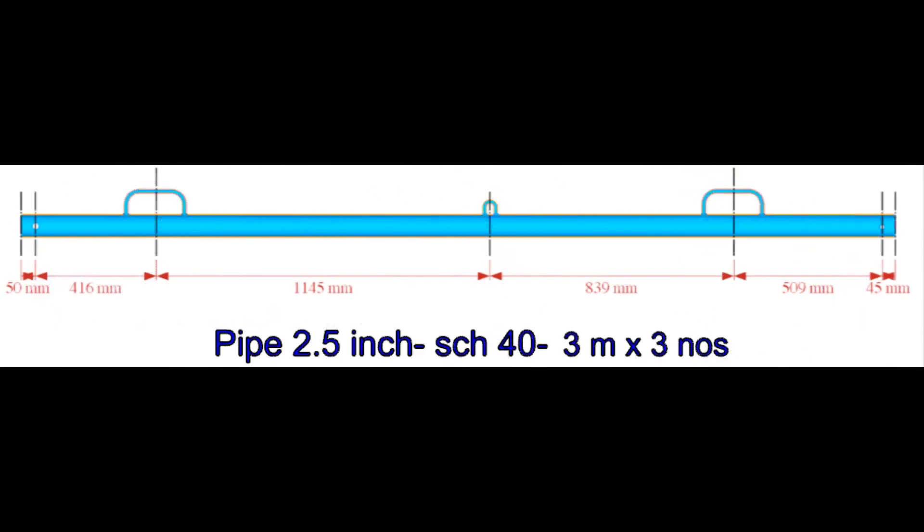The legs of the tripod are made from 2.5-inch, 40-schedule pipe. The length of each leg is 3 meters each. The diameter of the holes in the pipe is 24mm.